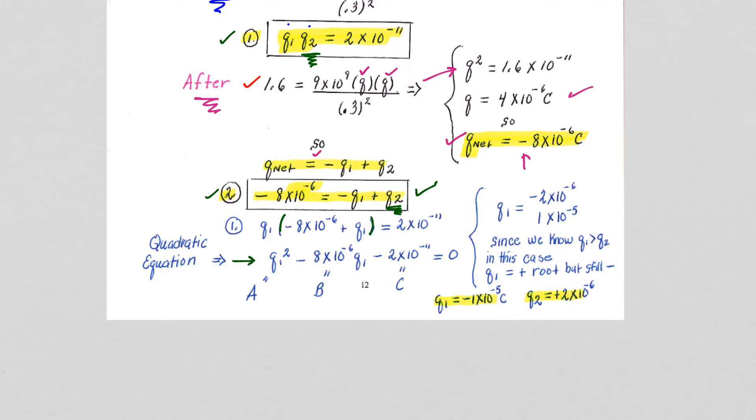And now I have a quadratic equation with Q1. A squared minus AX squared minus BX plus C equals 0. So you're just using your quadratic equation to get your two roots.